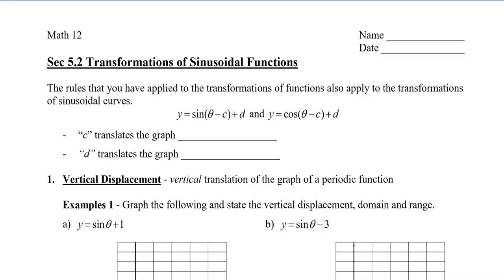To begin, let's take a look at what c and d do. The c is right beside the theta — it's within the brackets, but it's after the sine and the cosine. So c translates the graph horizontally. The d is outside the brackets and it's at the very back, and d translates the graph vertically.